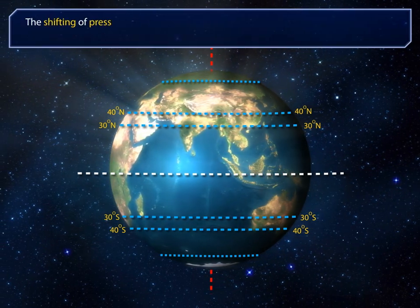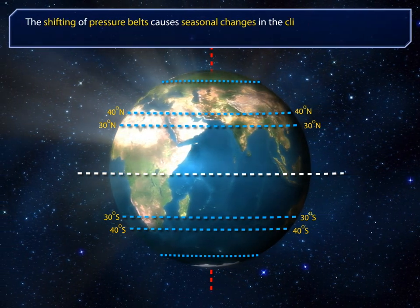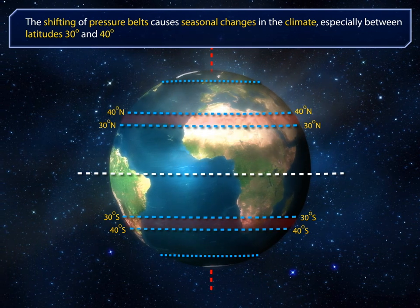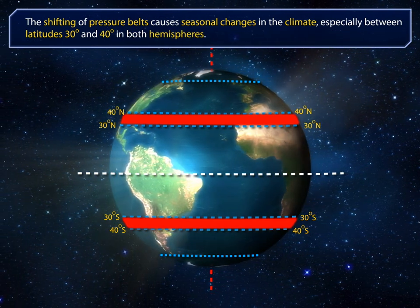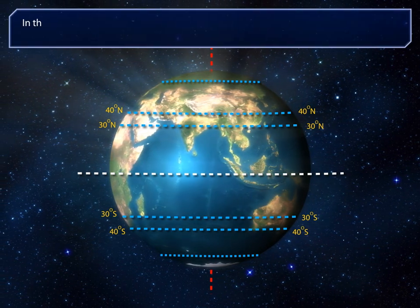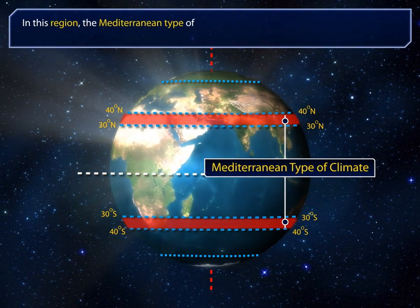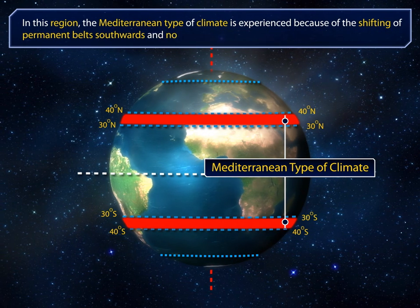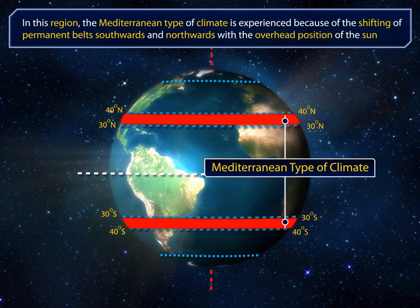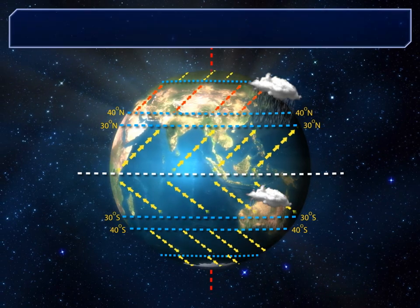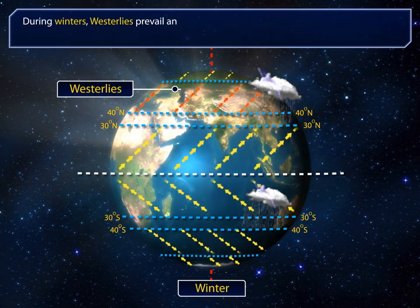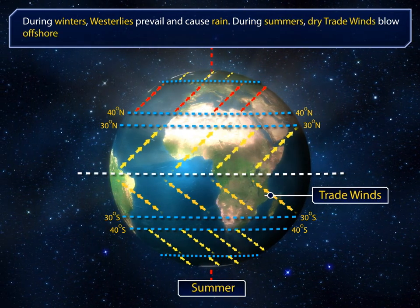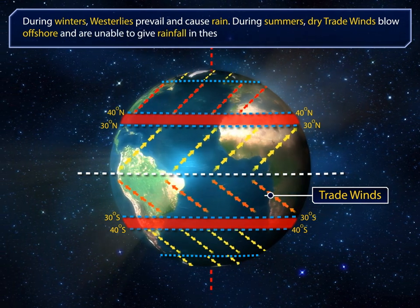The shifting of pressure belts causes seasonal changes in the climate, especially between latitudes 30 degrees and 40 degrees in both hemispheres. In this region, the Mediterranean type of climate is experienced because of the shifting of permanent belts southwards and northwards with the overhead position of the sun. During winters, westerlies prevail and cause rain. During summers, dry trade winds blow offshore and are unable to give rainfall in these regions.